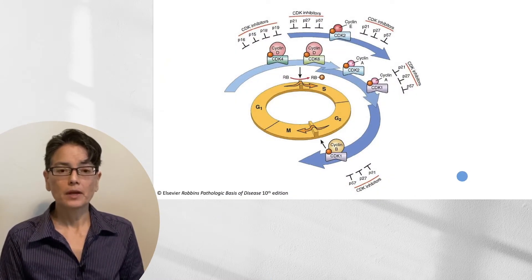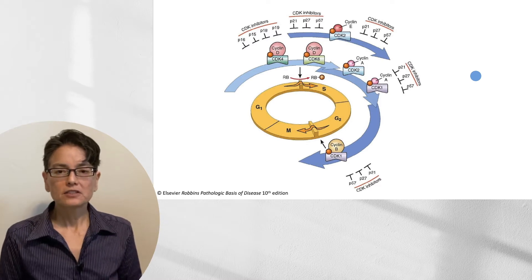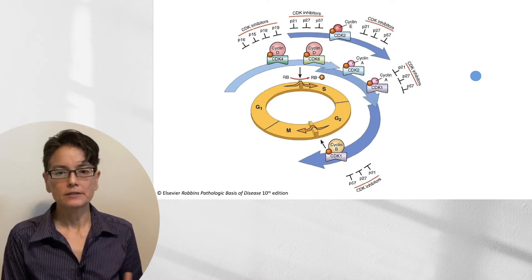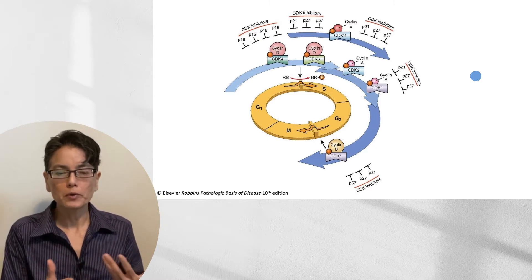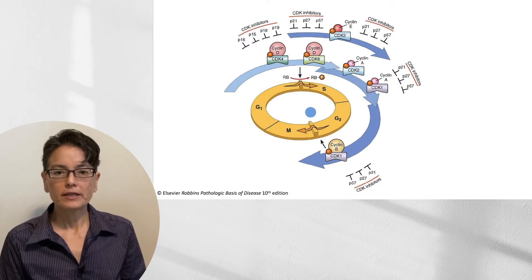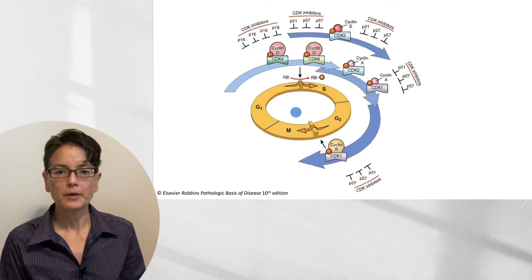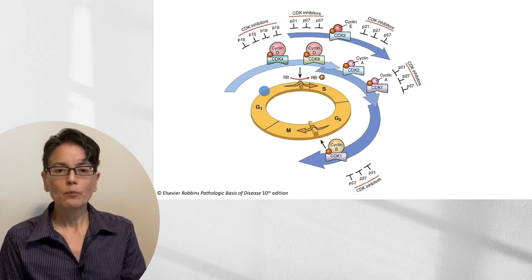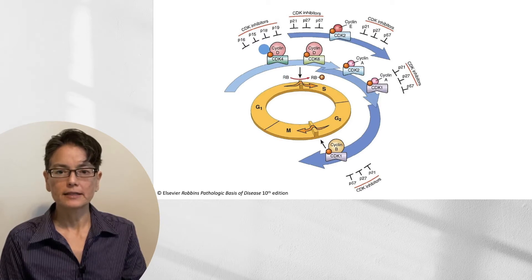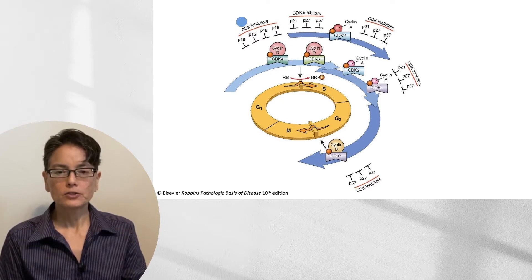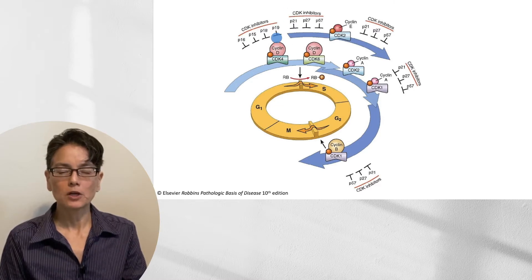This is an image from Robbins Pathologic Basis of Disease going into more detail of what's actually happening in the cell cycle. The cell cycle is very complicated, with a balance of inhibitors and promoters that drive you forward or make you pause. We have our G1/S, G2, and M phases. The G1/S transition is regulated by the retinoblastoma protein. What moves us through are our cyclins — cyclin D, cyclin A — our cyclin-dependent kinases, and our cyclin-dependent kinase inhibitors. I want you to focus on cyclin D, CDK4, and P21, because these will come up as we talk about P53 and its role in getting us through this transition point.